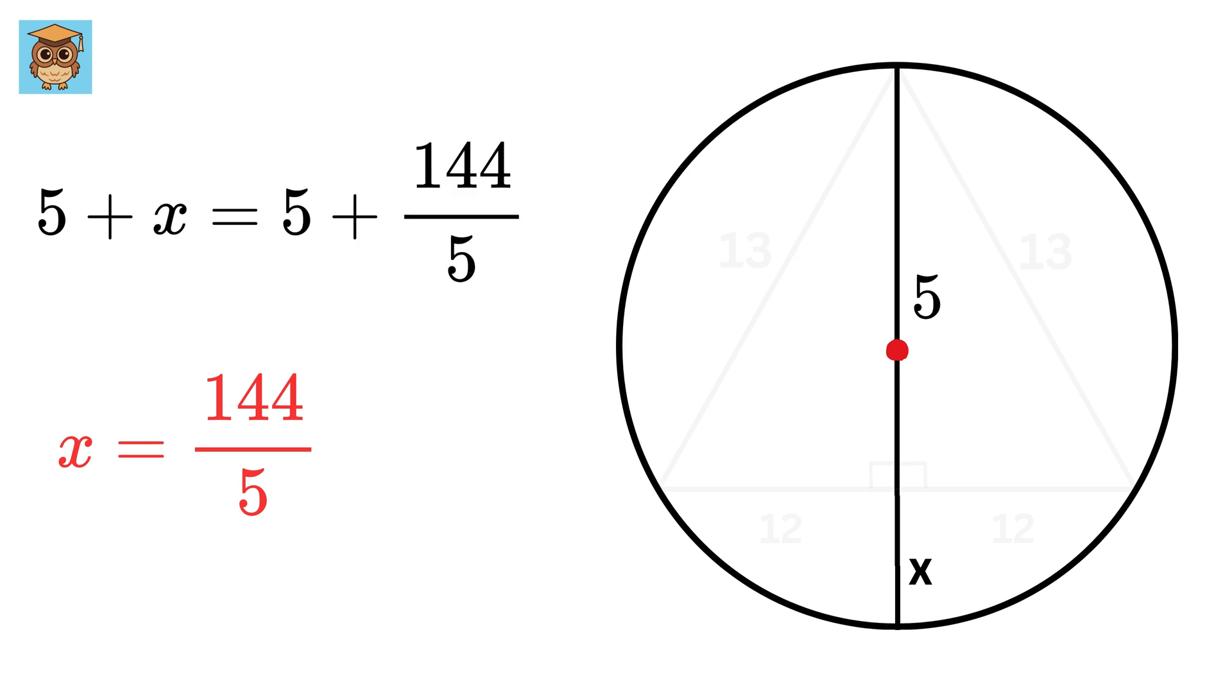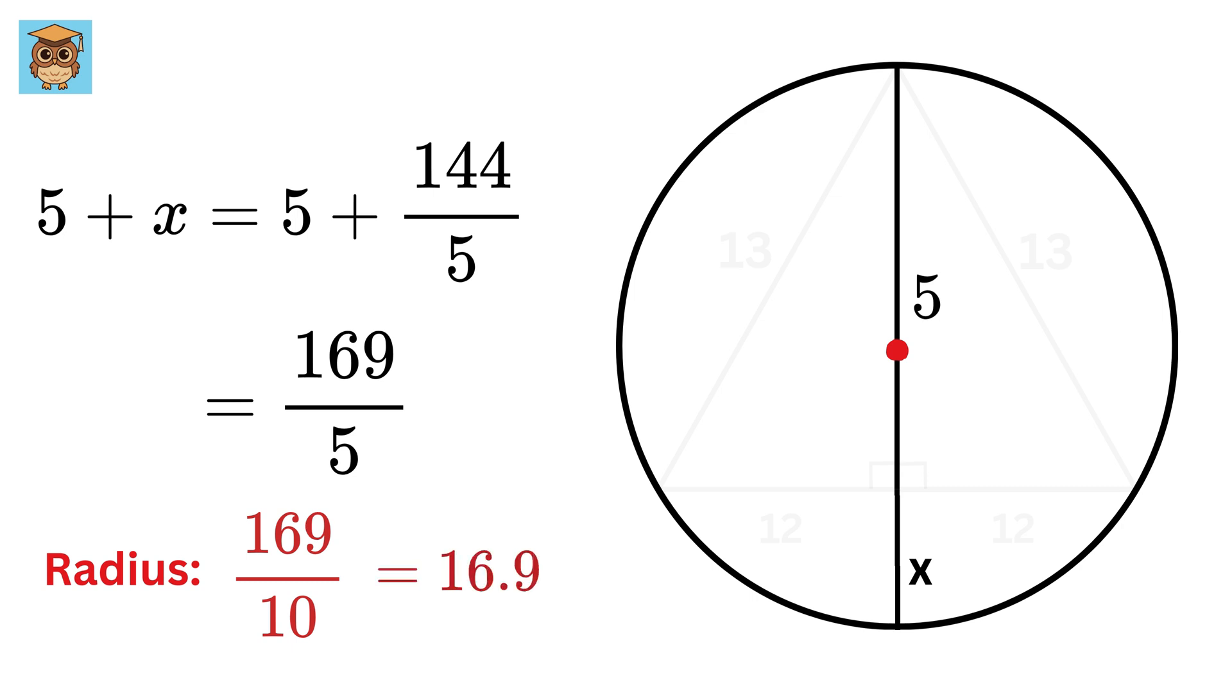Thus the diameter of this circle will be equal to 5 plus x, or 5 plus 144 over 5, or 169 over 5. And thus the radius will be half of this value, or 169 over 10, which in decimal would be 16.9.